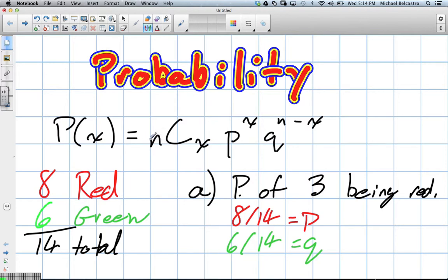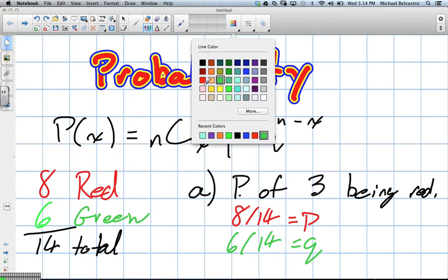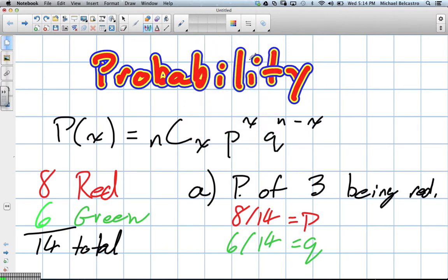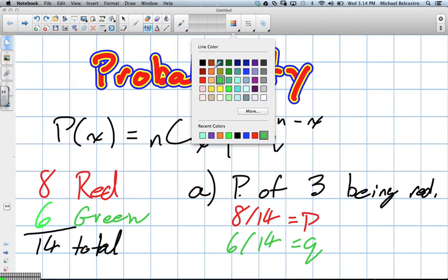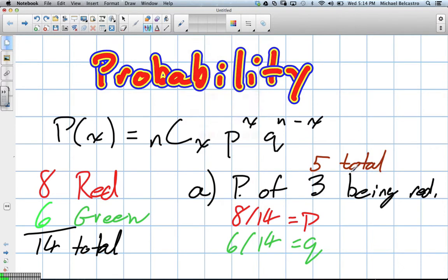The number of trials... probability of three being red. We were going to say that we've pulled out five total. So we've taken five total. What's the probability of three of them being red? So having three successes out of the total of five that we've chosen.